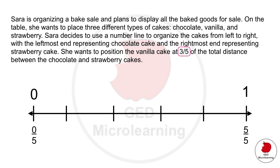And now it's very easy. The first segment is going to be 1 over 5. Second segment, 2 over 5, 3 over 5, 4 over 5, and 5 over 5. So where is 3 fifths? It's right there. So that's where the vanilla cake is going to be placed.